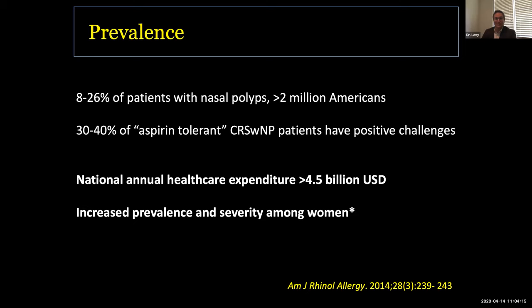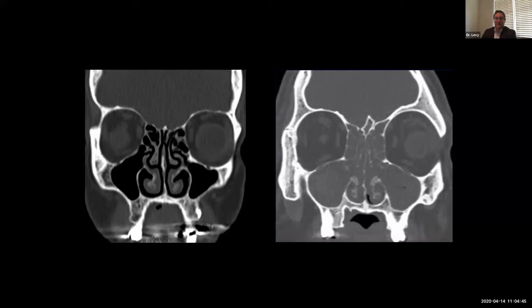This gives an estimate of a national annual healthcare expenditure of greater than $4.5 billion U.S. dollars. It is believed — and this is just emerging in the past year or so — that there's an increased prevalence and severity of disease among women. While the exact reason isn't entirely clear, there is an association between gender and COX-2 expression, where men have a higher level of this enzyme, which I'll show some figures to explain why that's significant.